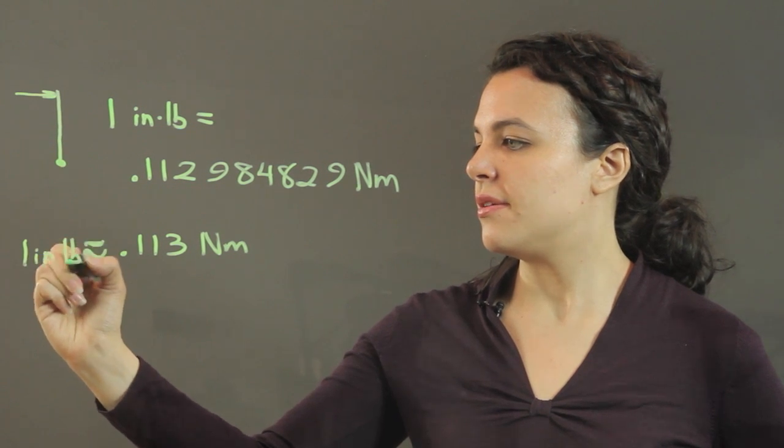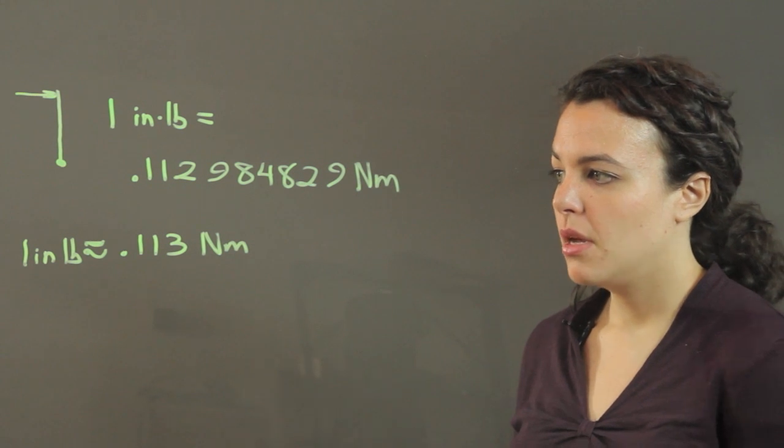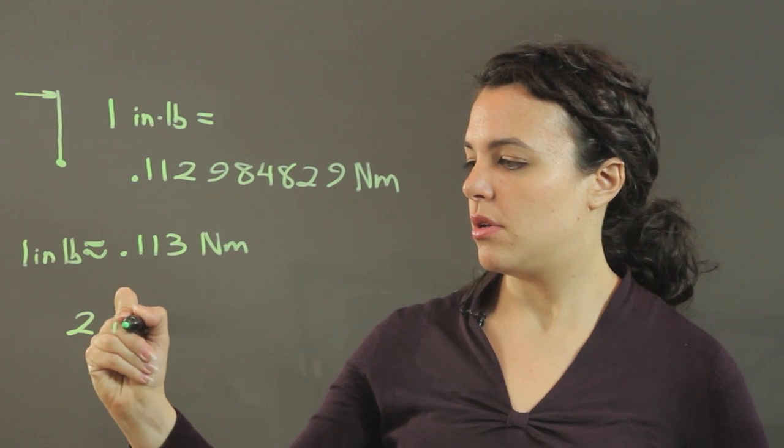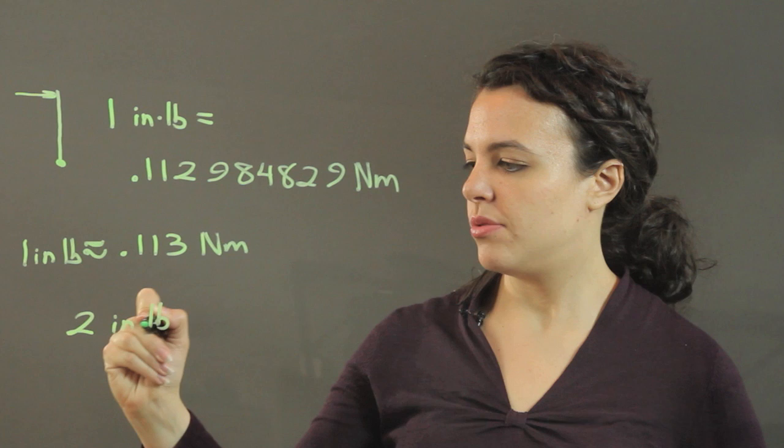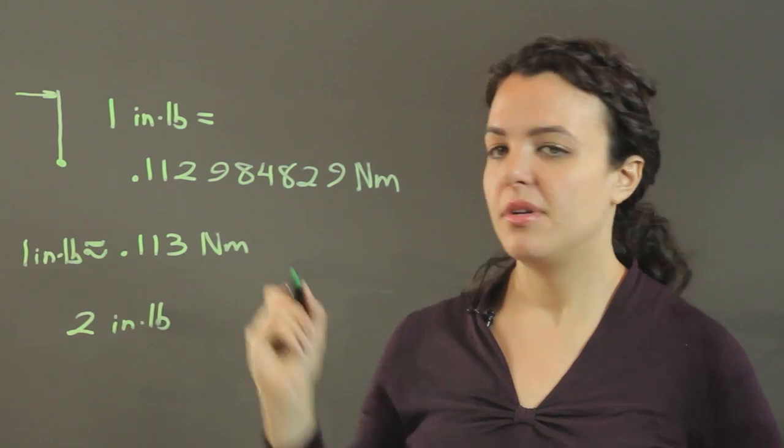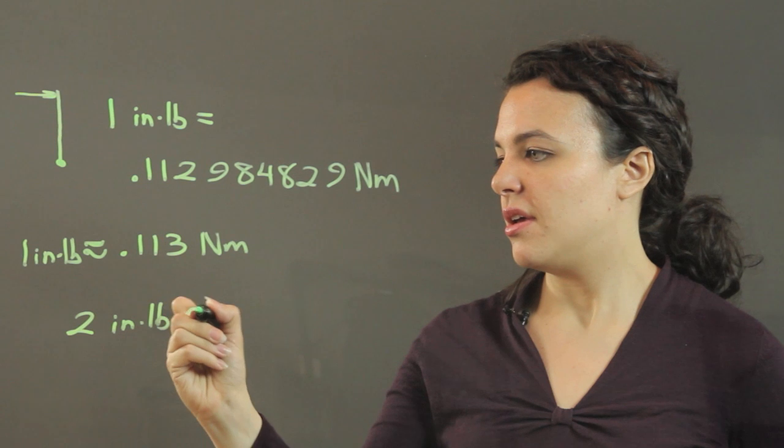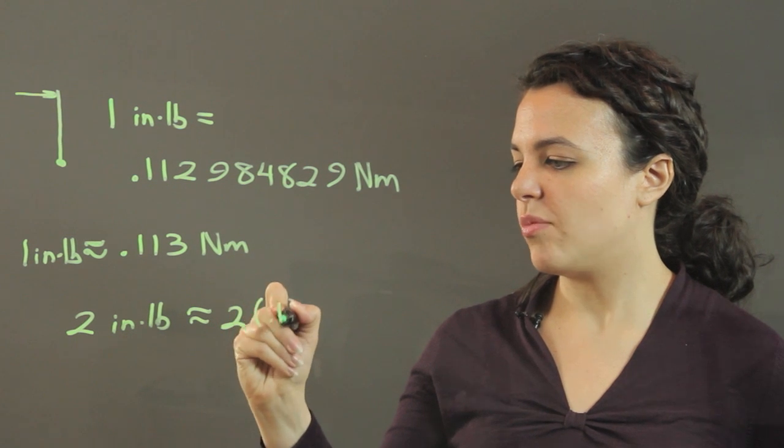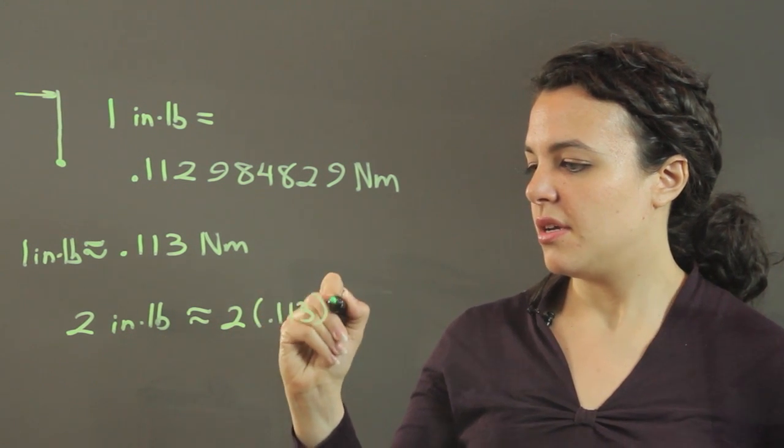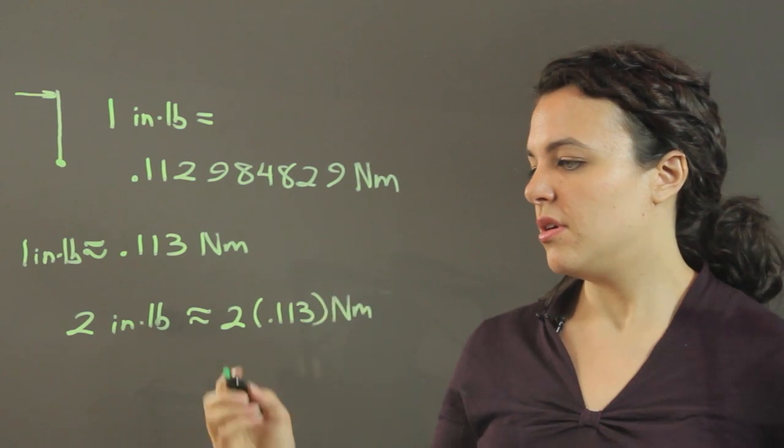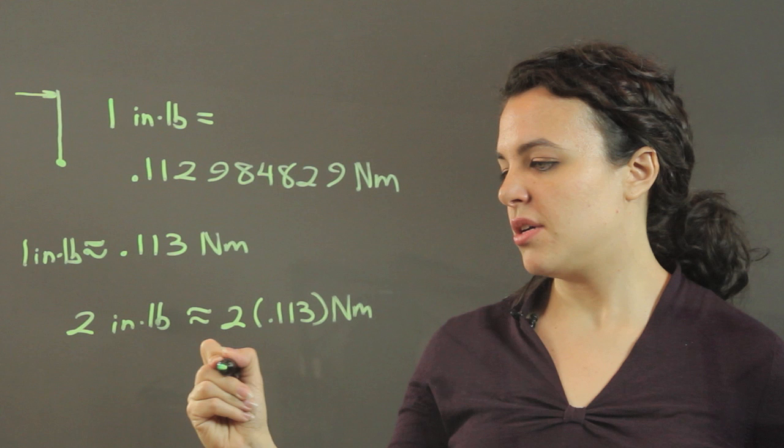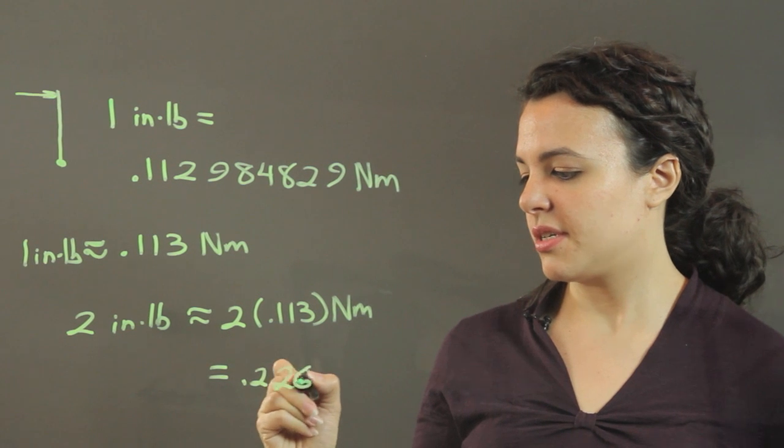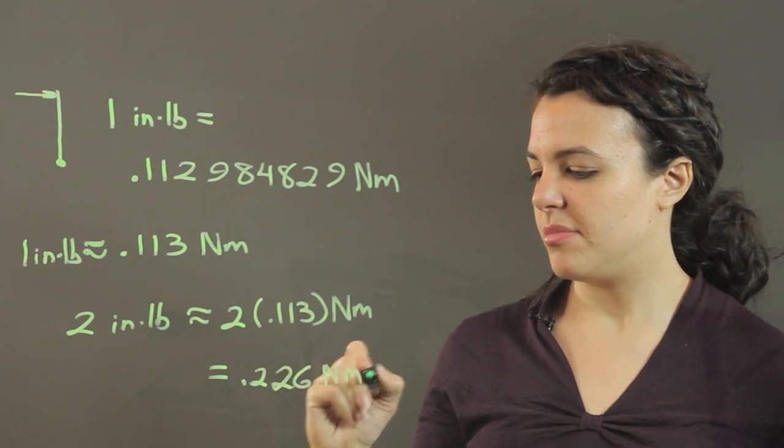And then, so if I had maybe 2 inch-pounds, I've got to put a multiplier between those, then they're about equal to 2 times 0.113 newton-meters, which is equal to 0.226 newton-meters.